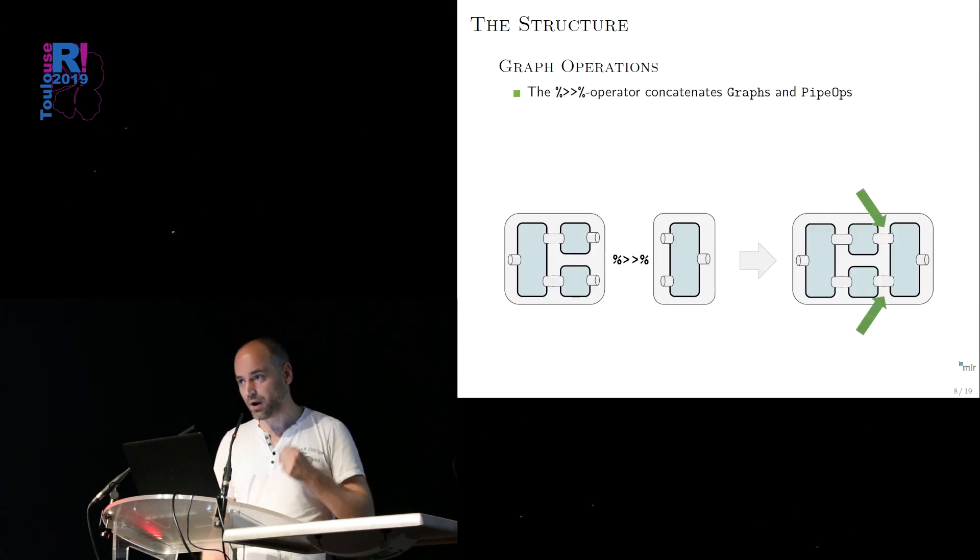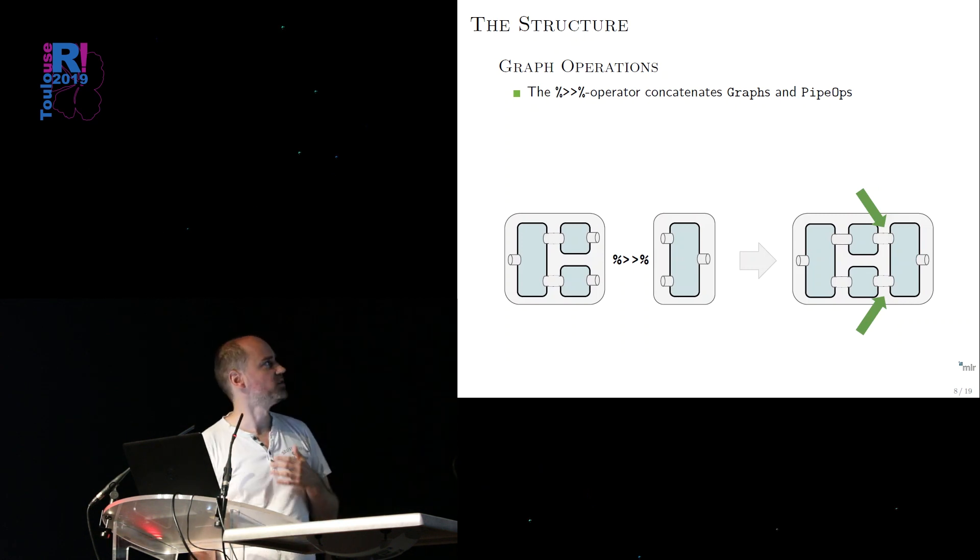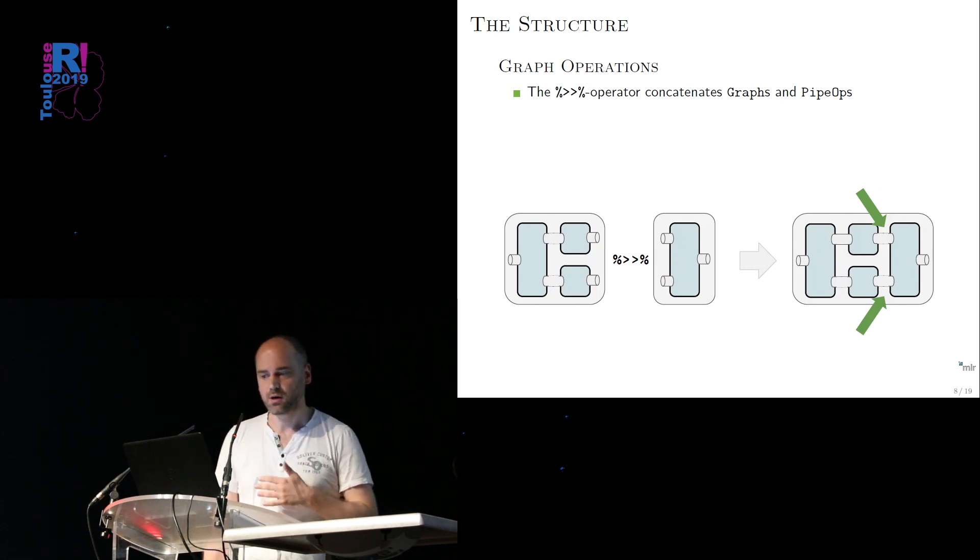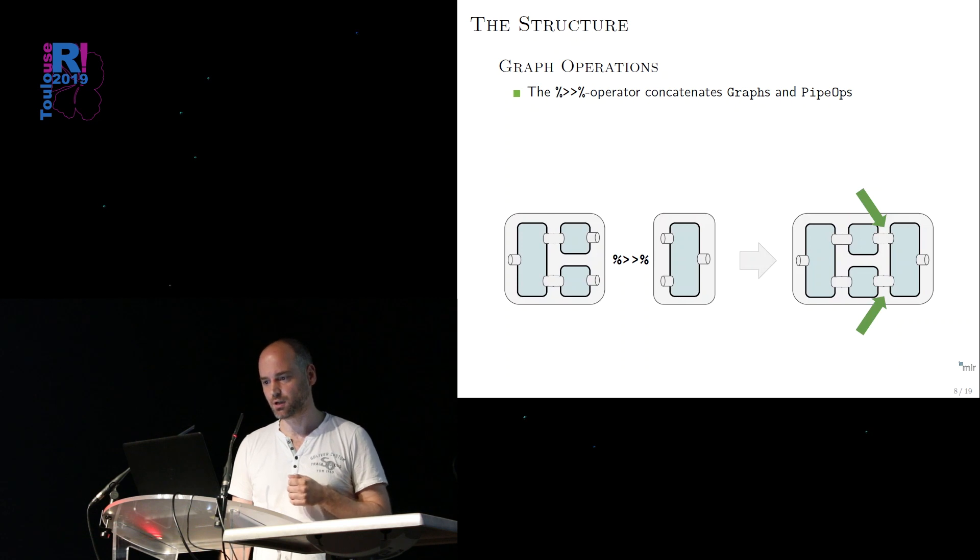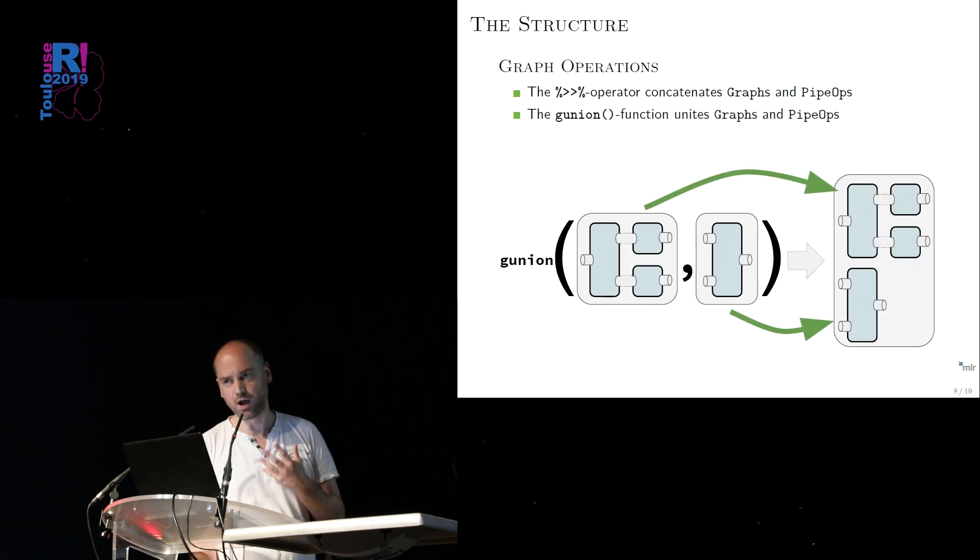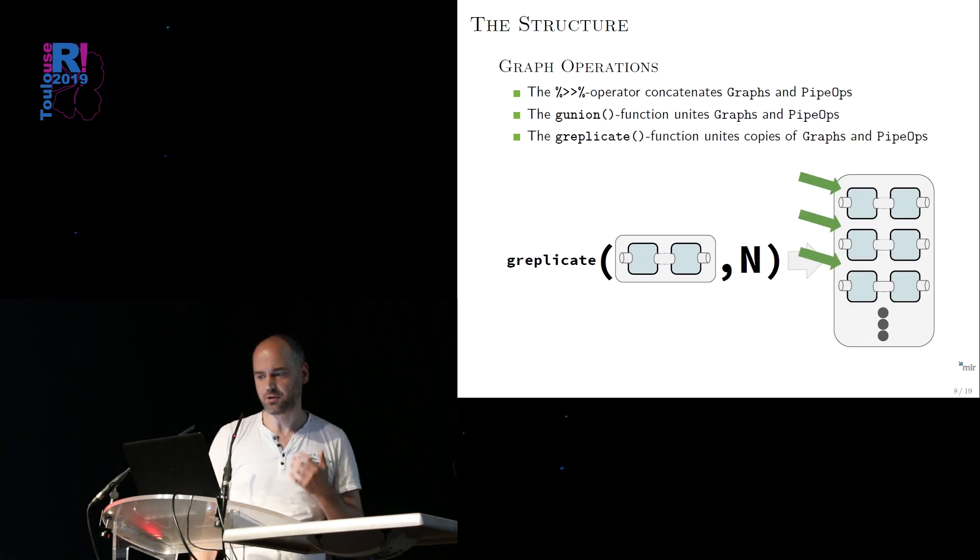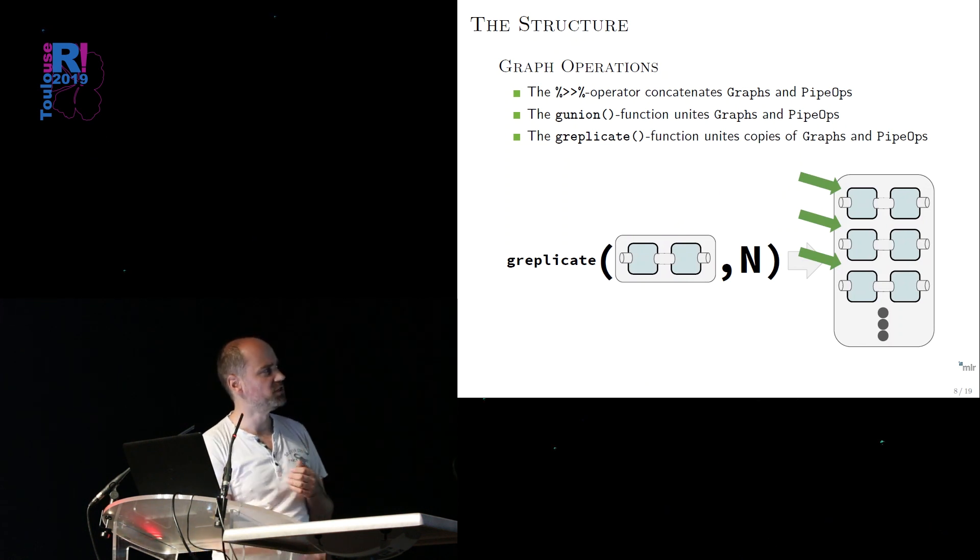So I've explained now how these pipe operators work. How can we now basically combine them to produce nice interesting graphs? There's three very simple operations that you can do on these pipe operators and on graphs. So the first one is the pipe or concatenation operator. That's very simple. It takes two graphs and it concats them together. So it joins the output with the input sockets and you get a concatenated result graph. The second operation is even simpler. So it's the graph union operator. It takes two separate graphs. It does nothing with them. It just joins them together into one complete graph. And the third one is the gReplicate.